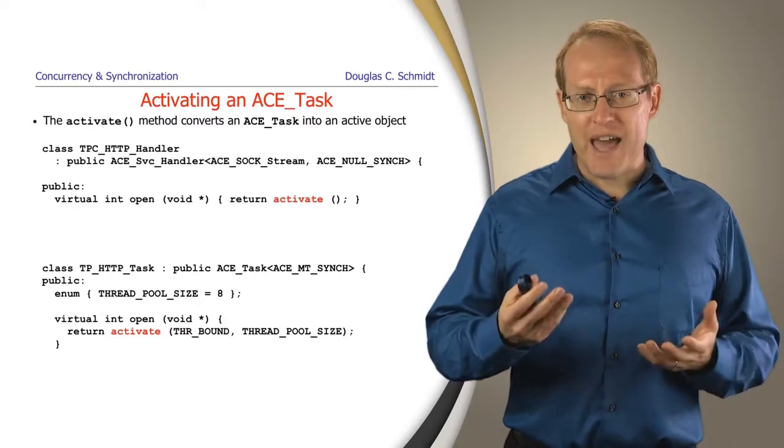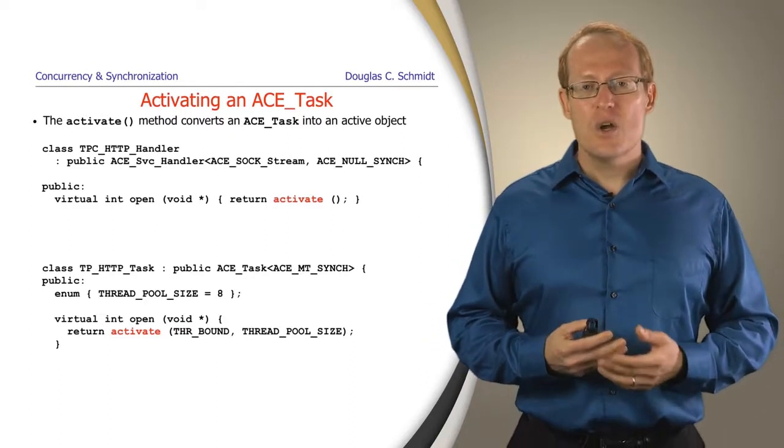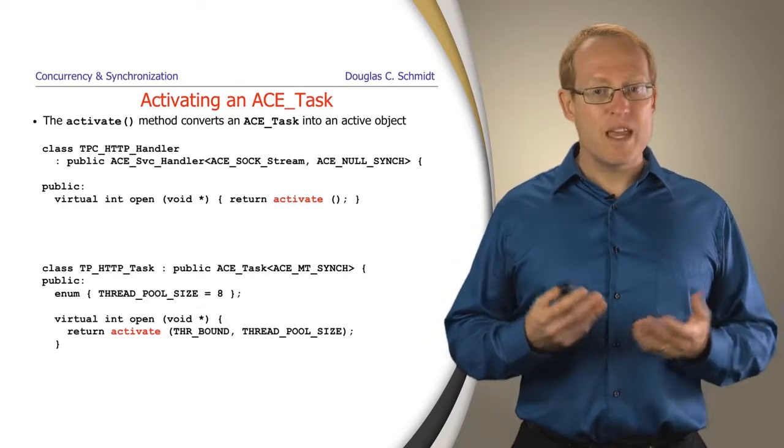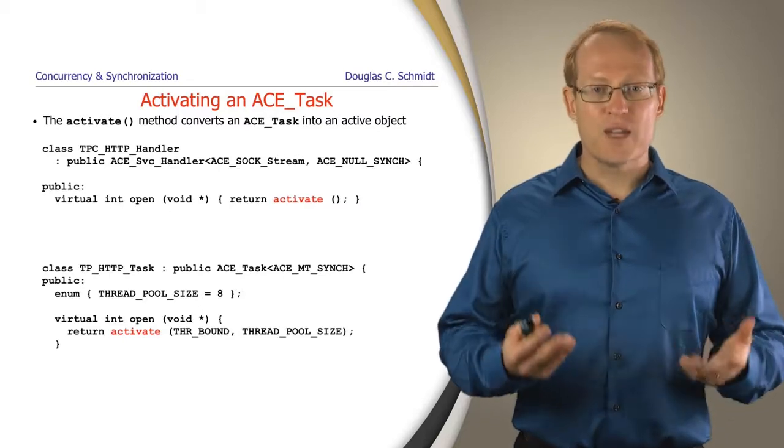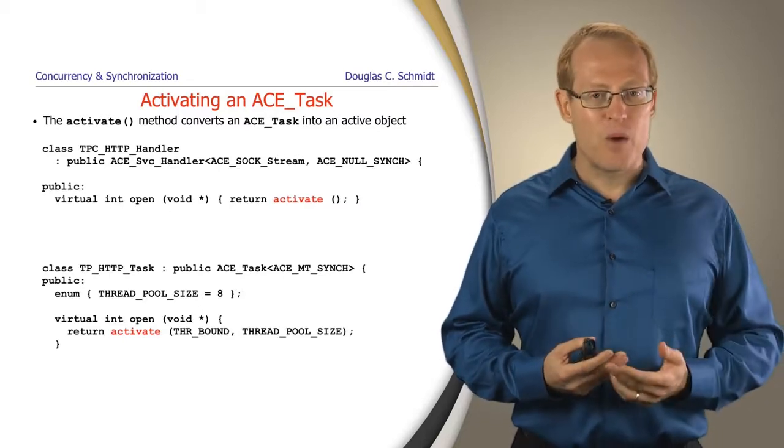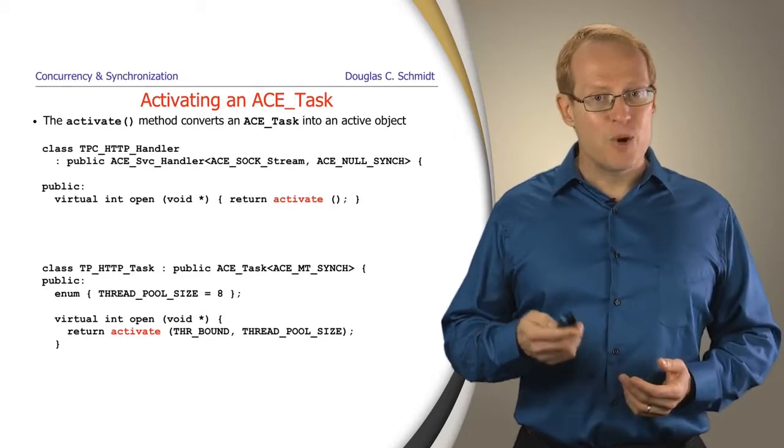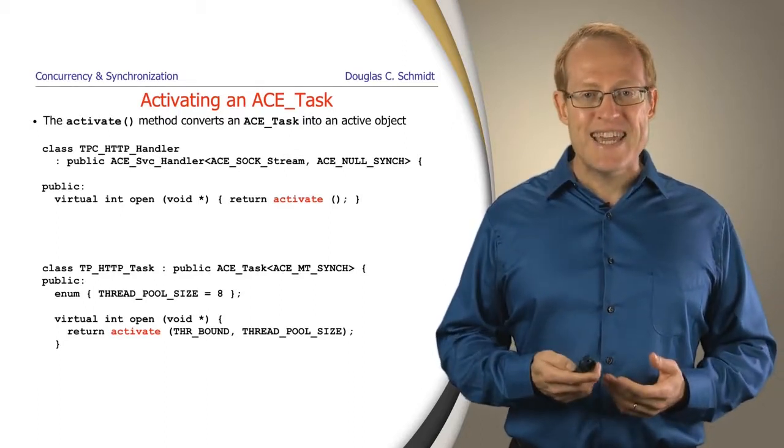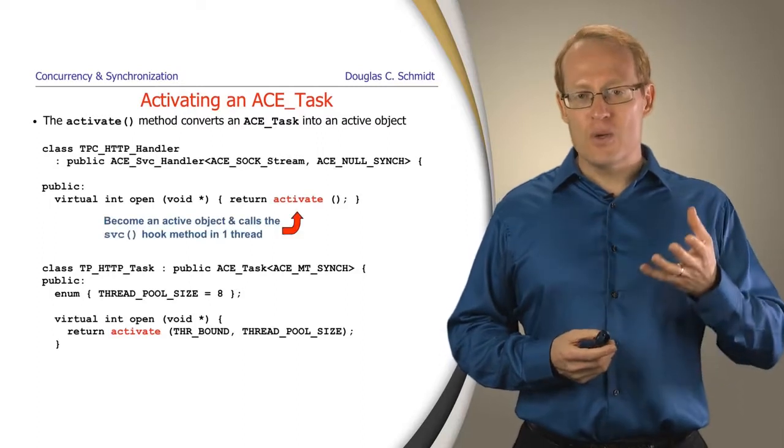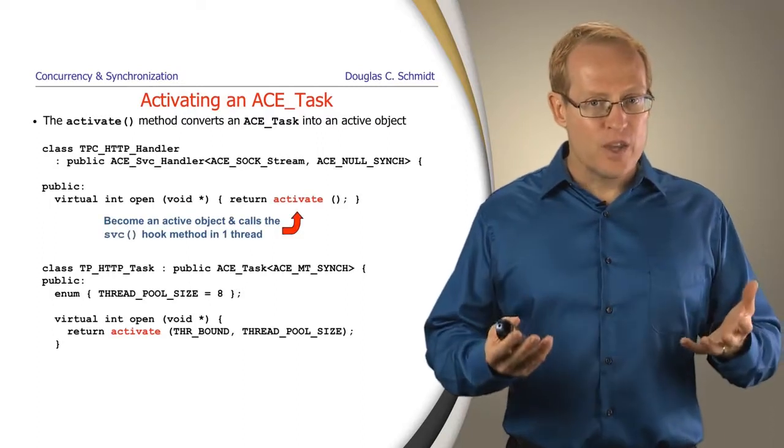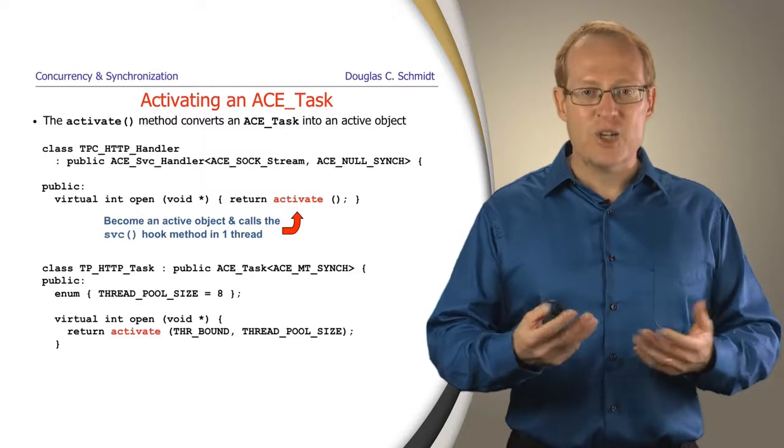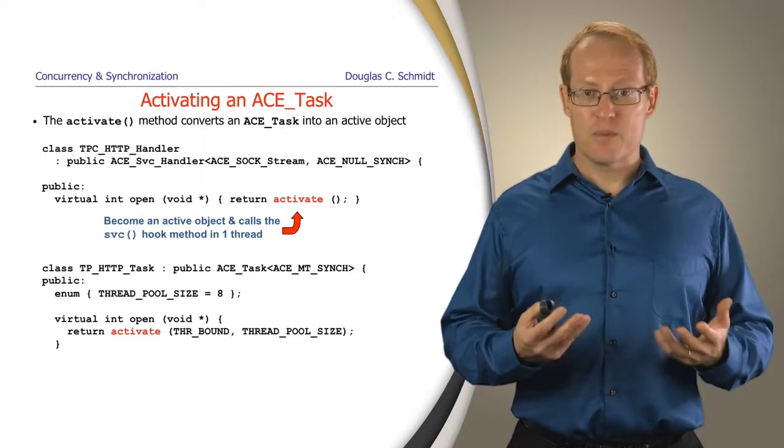Let's talk now about how you actually go about activating an ACE task. So when you call the activate method to make it become an active object, several things happen. First, let's talk briefly about when this might occur. We'll talk shortly about the thread per connection or TPC HTTP handler. And that's going to use activate to create a single thread of control for every connection and every get request that comes to the server.